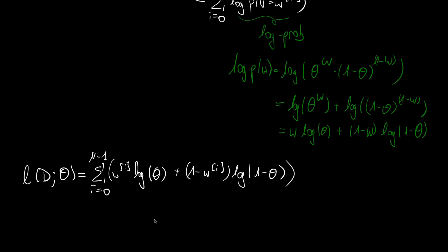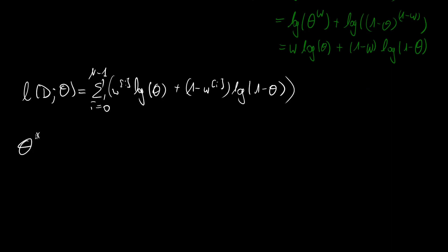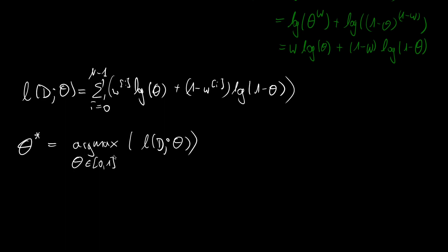We say that theta star — to denote our fitted parameter — is the arg maximum over all theta within the range zero to one over the log likelihood function. So we are looking for a maximum, and this calls for finding maxima: we take the first derivative and we set it to zero.